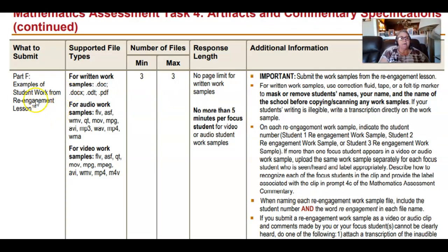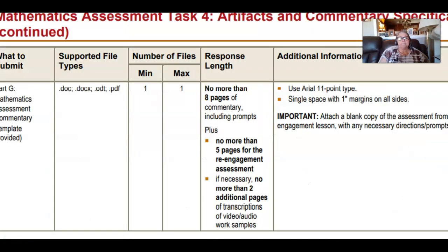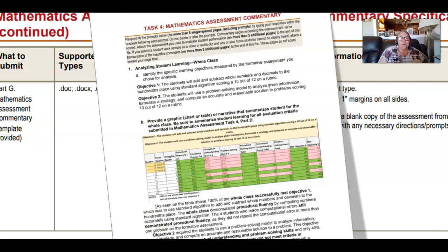You'll collect work samples from the assessment, labeling them focus student one, two, and three — just like you did for Task 3. After teaching, you'll have a re-engagement lesson with example student work, making sure to use the term 're-engagement' in your file names. You'll give a different assessment and collect new work samples from those same focus students. Then you'll write your commentary using the provided template — about eight pages. Three pages is not enough; others will be giving eight.